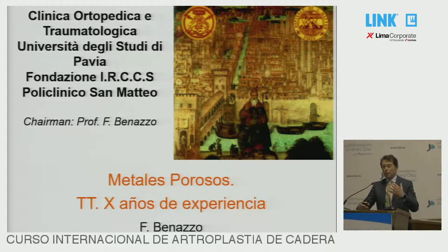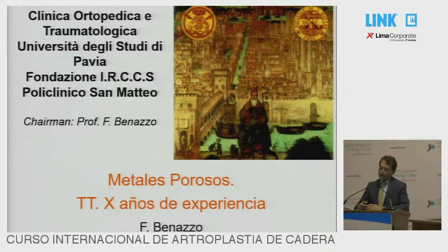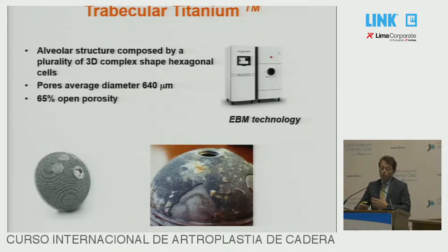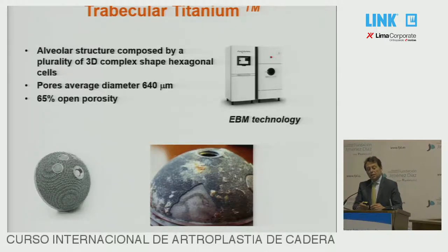We are talking about the metal back now, metallos porosos. TT means trabecular titanium. Trabecular titanium has reached 10 years of experience. This kind of metal is a porous metal in a 3D complex shape with hexagonal cells. The pores have an average diameter of 640 microns.